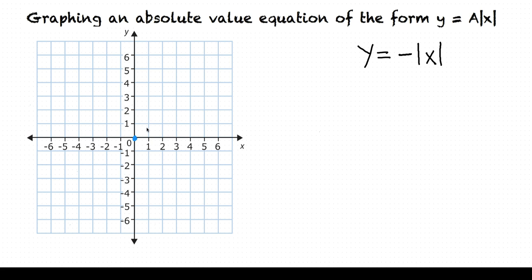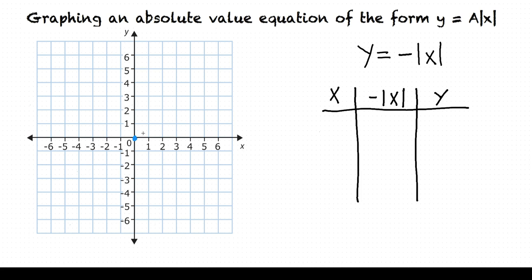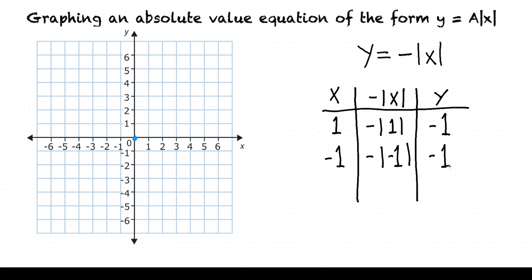Now let's plot at least one point on either side of our vertex. We can create a table to help us find these points. One point to the right is when x equals 1. In this case, we'll have negative absolute value of 1, so that's negative times 1, which is negative 1. Let's also plot a point to the left. If x equals negative 1, we'll have negative absolute value of negative 1. The absolute value of negative 1 equals 1, so what we really have is negative 1.